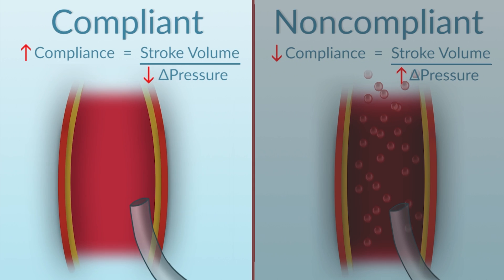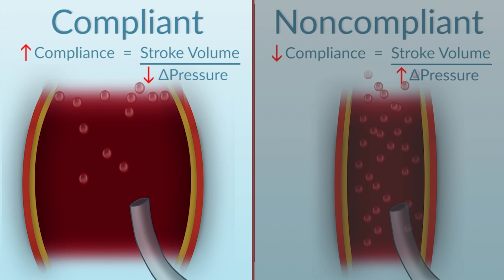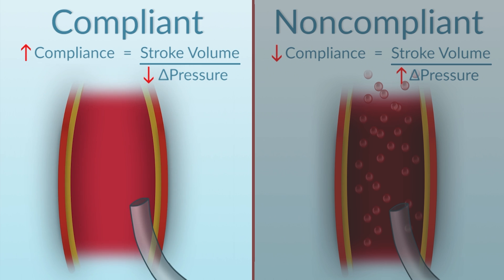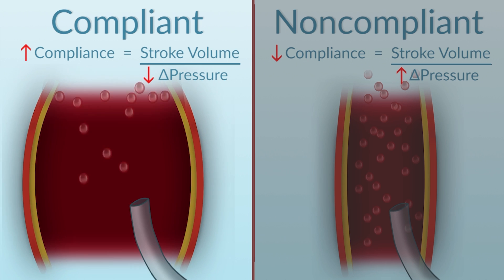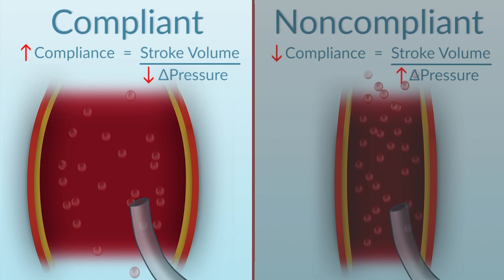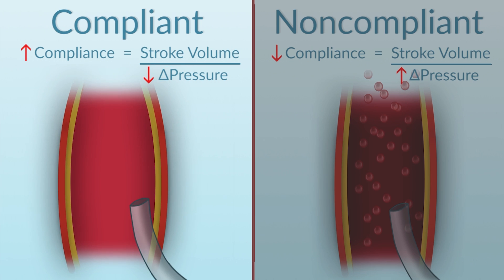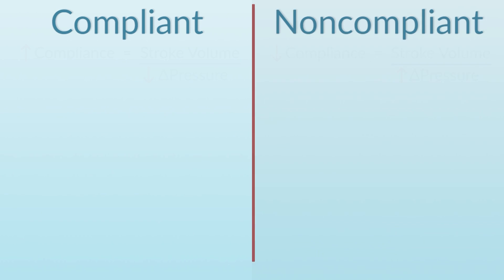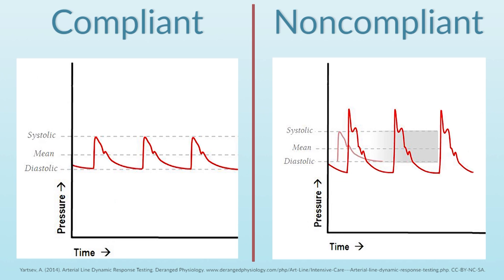In a younger person with a very compliant arterial system, the stroke volume will almost be completely damped out by an infinitely compliant system. Therefore, the volume ejected will appear more like a straight line in an infinitely compliant arterial system, and it will appear as a square wave in a non-compliant system.